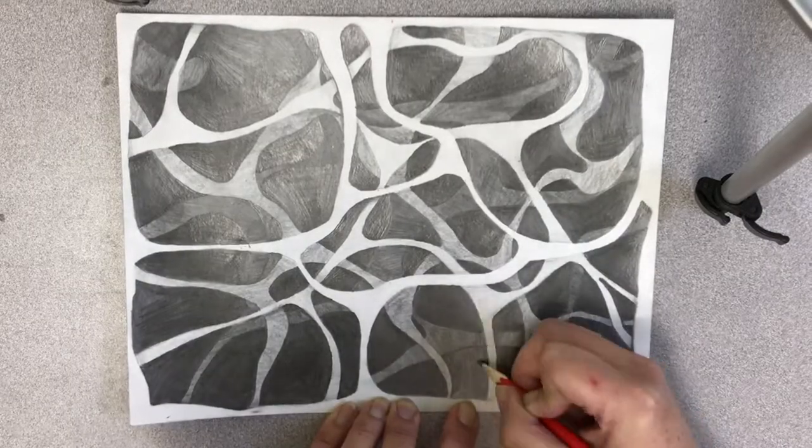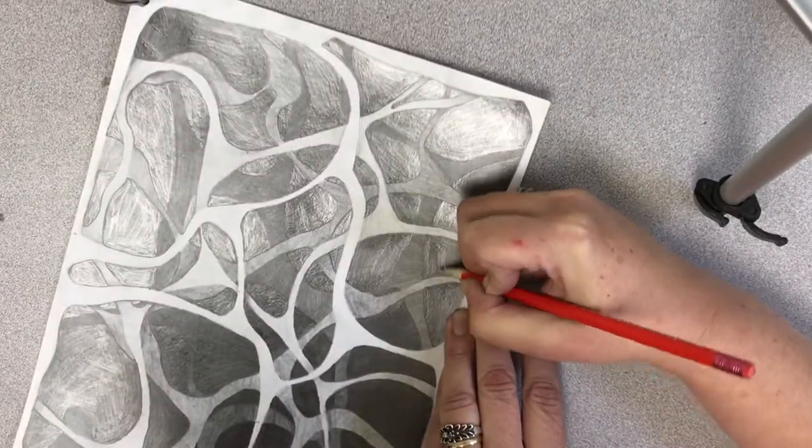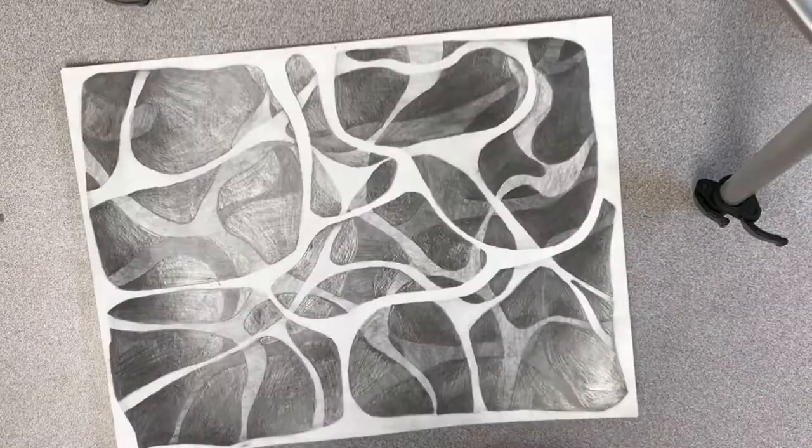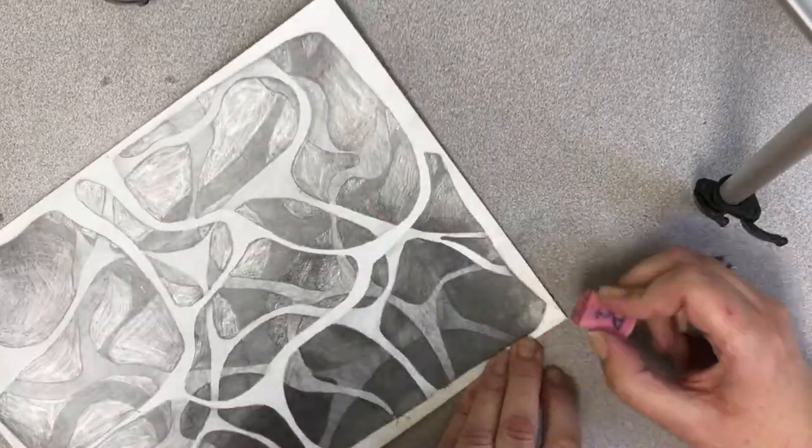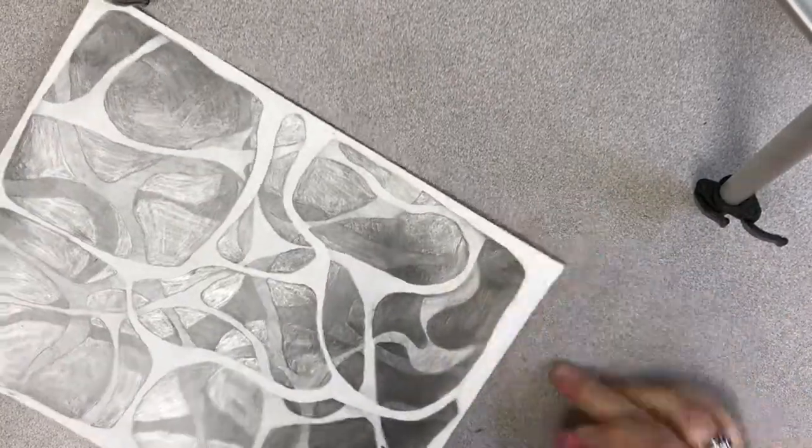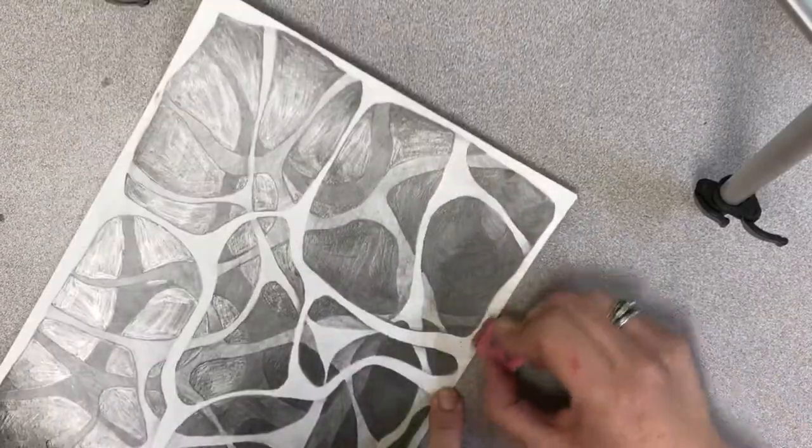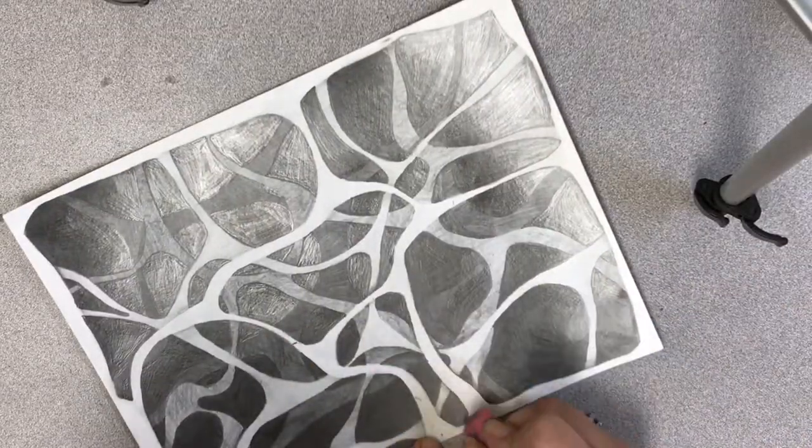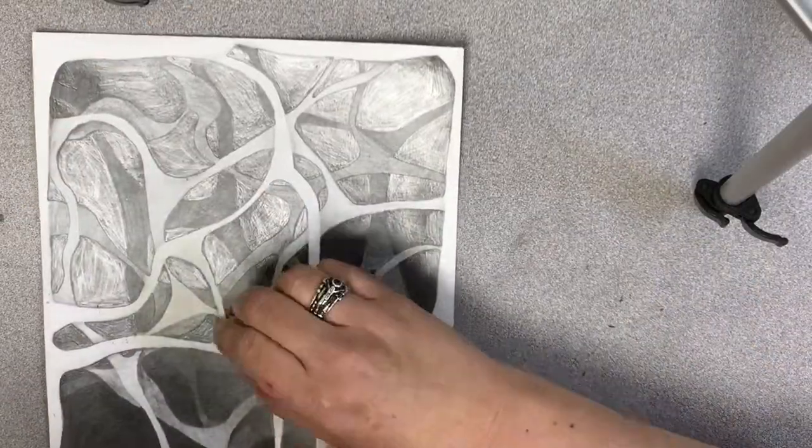Skipping forward so you don't have to watch coloring in the entire thing. Almost finished here. Now once I'm finished shading in all the values, I went back with an eraser again on the white areas to make sure that they were as white as they possibly could be.